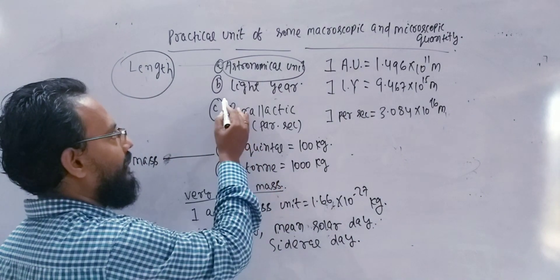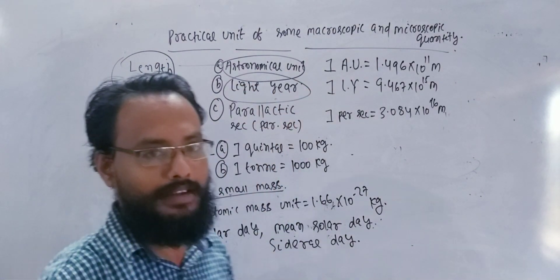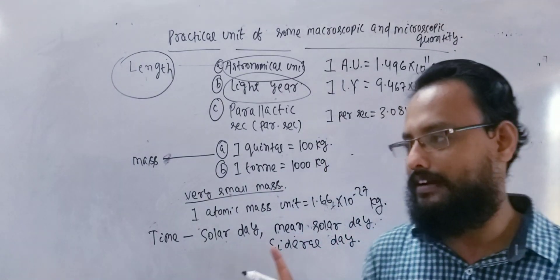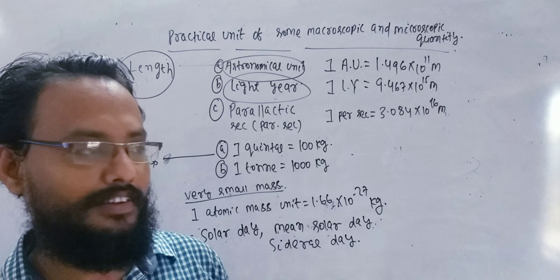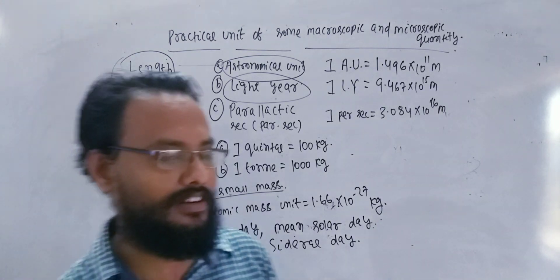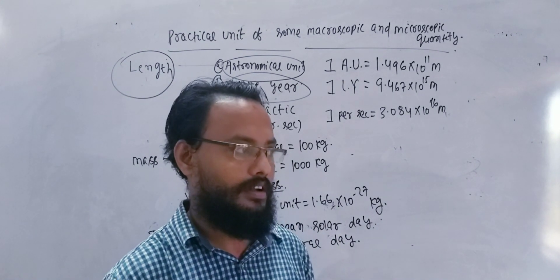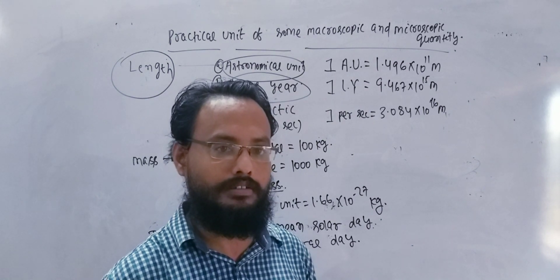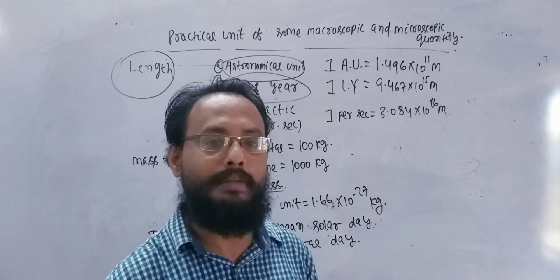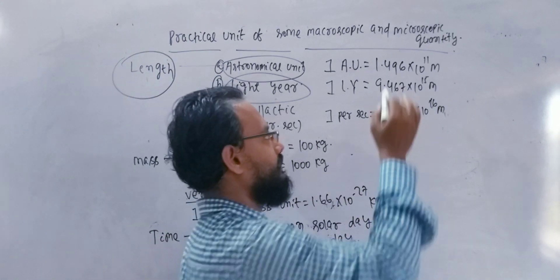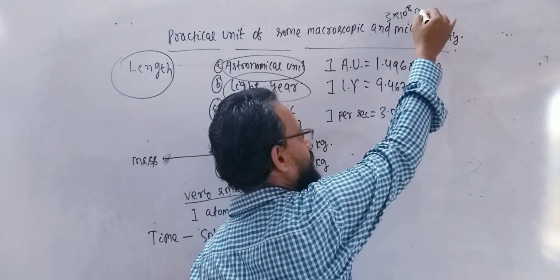Let's say light year — so we have a time. Light year is a length unit practically. Light, in vacuum or in air, has a rate. The speed is 3 x 10 to the power 8 meter per second.